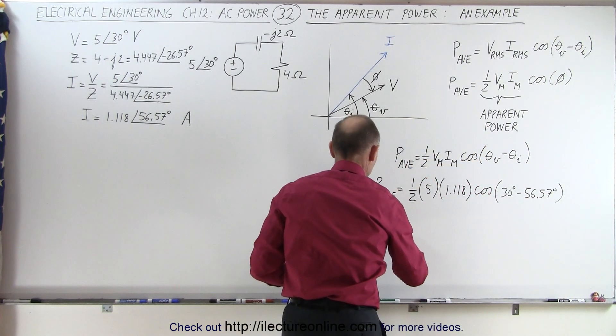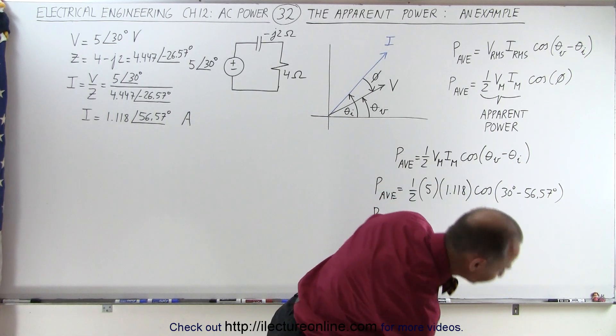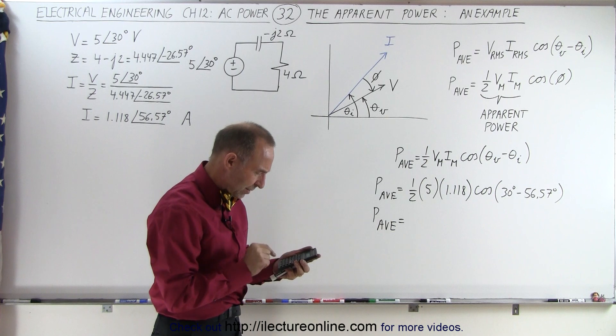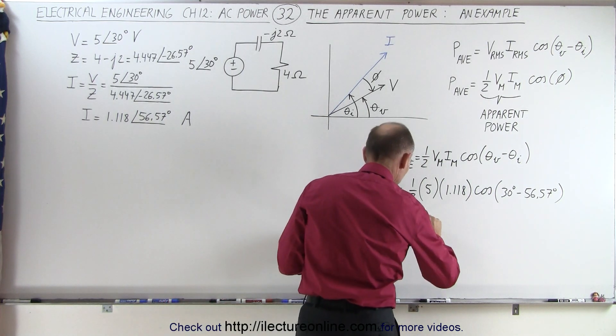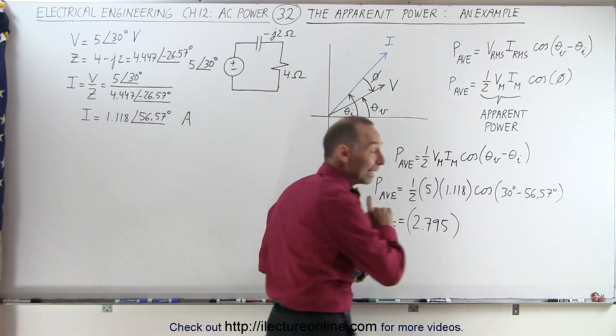So the average power is therefore equal to, let's calculate this. So you have 2.5 times 1.118, that's 2.795. We're not going to put units on that yet.